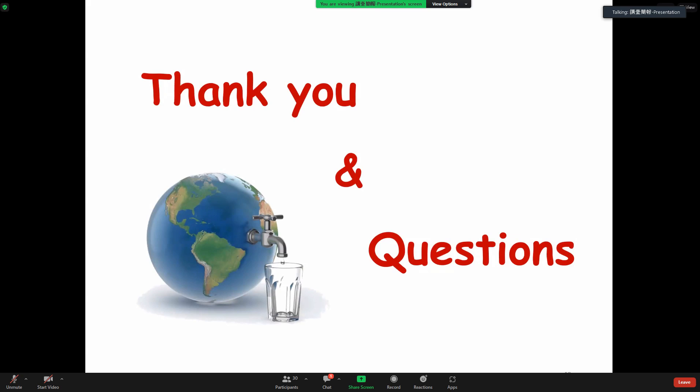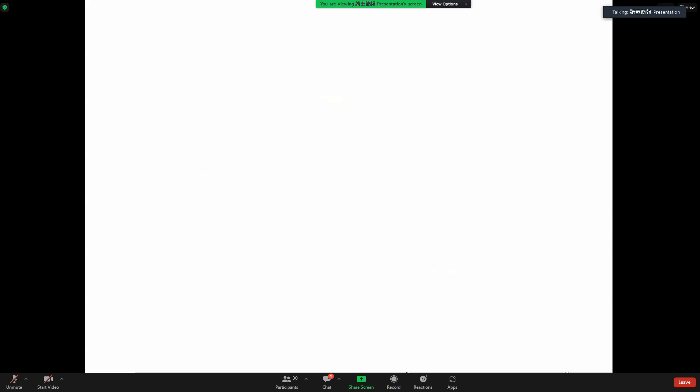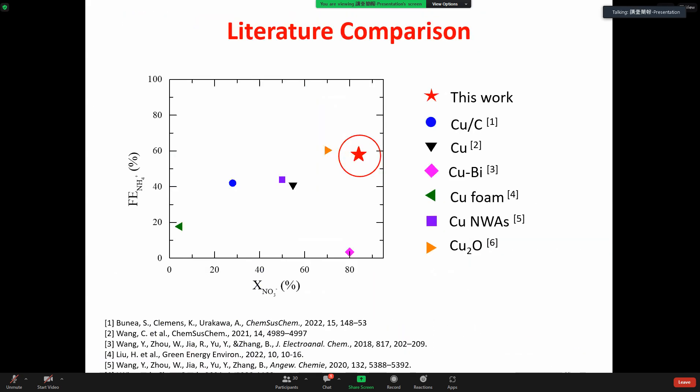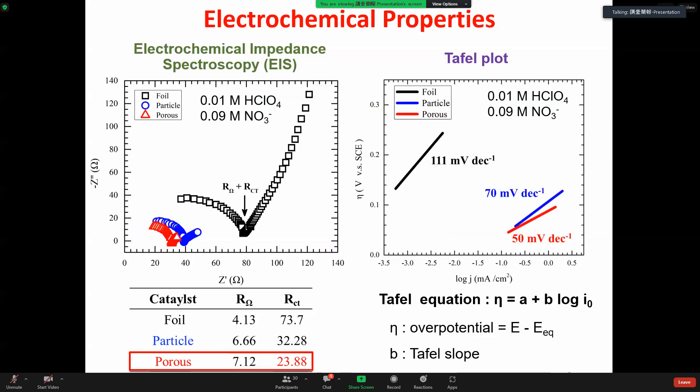Thank you. There's a question here to the left. Thank you very much for the nice talk. From your impedance data, I could see that the charge transfer resistance and the solution resistance seems to have a reverse relationship. So why is that? For copper foil and copper porous, the one that has higher charge transfer resistance has smaller solution resistance.